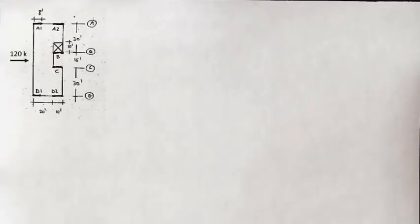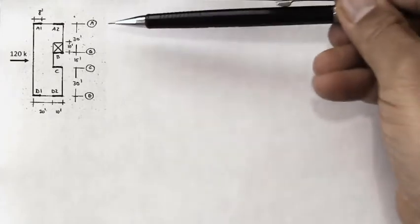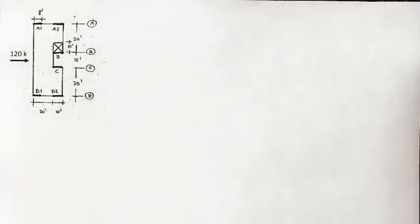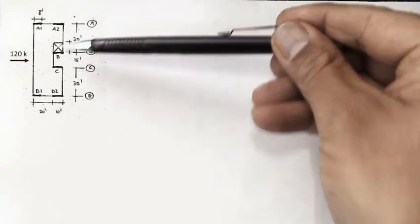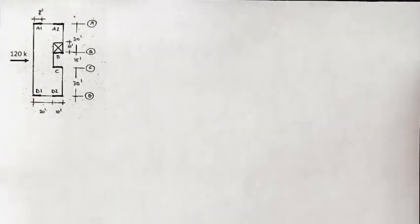What we're showing here is one diaphragm. 120 kips is the diaphragm design force, which is probably not the same as the seismic design force for the lateral system. We have four lines of resistance A, B, C, and D. There's a small 10 foot by 10 foot opening here adjacent to line B.